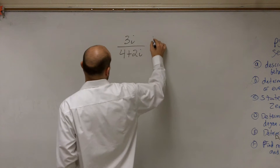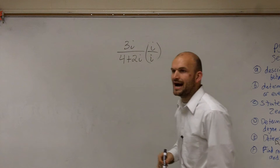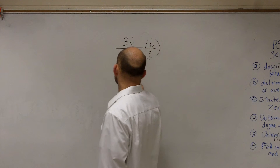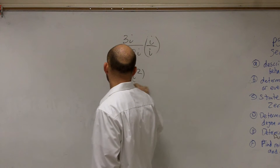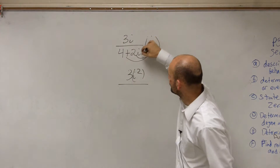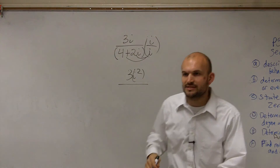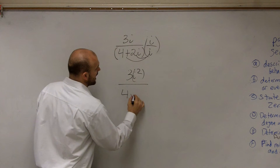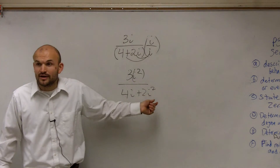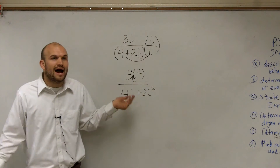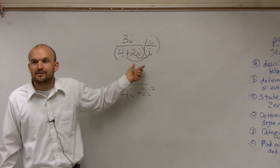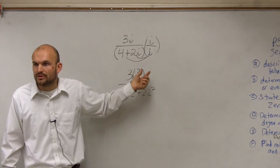So if you guys were to do that for this one — if you were to multiply by i over i — we would get a problem because you're going to get 3i squared on the top, which is good, but then on the bottom, you have to make sure you apply the distributive property. When you get to the bottom, what happens is you get 4i plus 2i squared. So it's good for this one, but now you have 4i again on the bottom. So multiplying by i over i when you have a binomial on your bottom is not going to help.